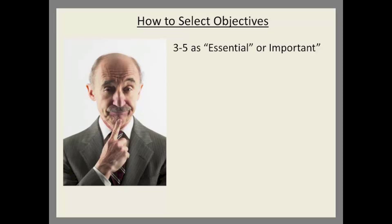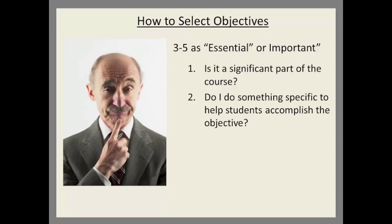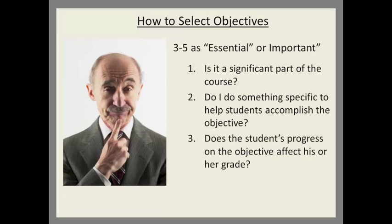In selecting essential or important objectives for a particular course, you ask these three questions. First, is it a significant part of the course? Do I do something specific to help the students accomplish this objective? And finally, does the student's progress on this objective affect his or her grade? If the answer is yes to each of these questions, then that objective should be marked as essential or important.